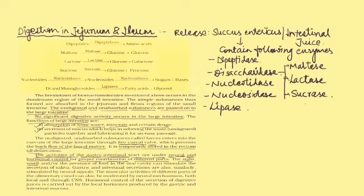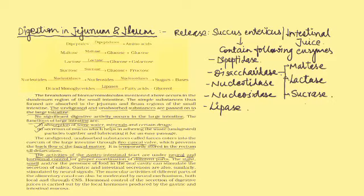Unabsorbed substances pass into the large intestine. There are no significant digestive activities in the large intestine. The large intestine has two functions: first, absorption of water, minerals, and certain drugs; and second, storage and formation of fecal matter. When undigested material reaches the large intestine, it enters through the cecum. An ileocecal valve is present between the ileum and cecum. This ileocecal valve is a unidirectional valve that prevents the backflow of undigested and unabsorbed material that has entered the large intestine. All these digestion-related activities are controlled by neural and hormonal control.